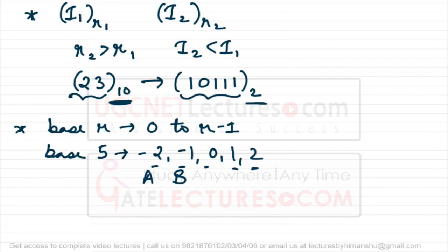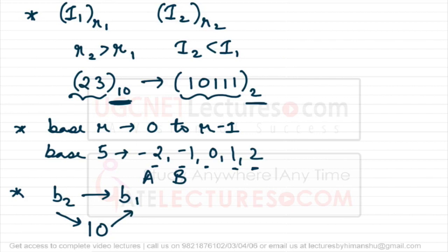Now let's talk about conversions. If you are given a number in base b2 and you have to convert it to base b1, the general procedure is: first convert the number from base b2 to decimal (base 10), then convert that decimal number into base b1. We've already seen both of these steps. We are always going to use this procedure, except when the bases involved are powers of 2.